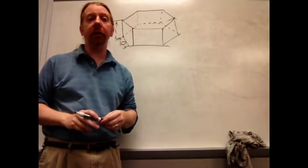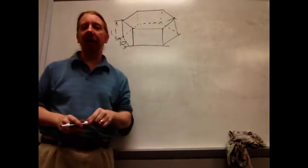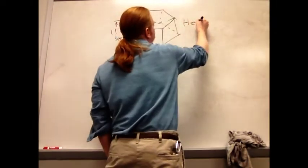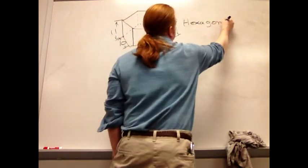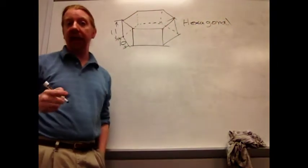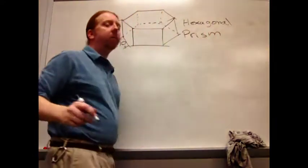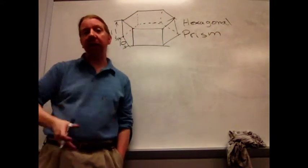In this example, we're going to be looking at a hexagonal prism. Hexagonal, because its base is a hexagon. Prism, because it's made of a stack of those hexagons.